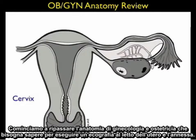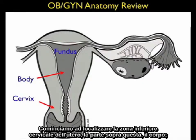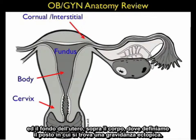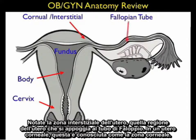Let's begin by reviewing the OBGYN anatomy that we'll need to know to perform bedside ultrasound of the uterus and the adnexa. We'll begin by locating the lower cervical region of the uterus, the portion above that — the body — and the fundal region of the uterus above the body, which is where we define an intrauterine pregnancy to be located. Notice the interstitial region of the uterus, that region that abuts the fallopian tube.